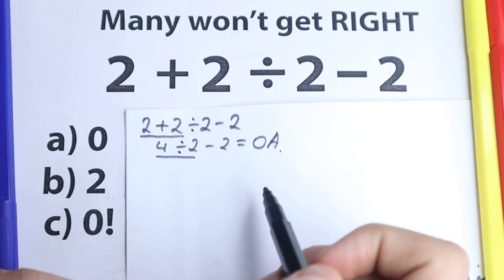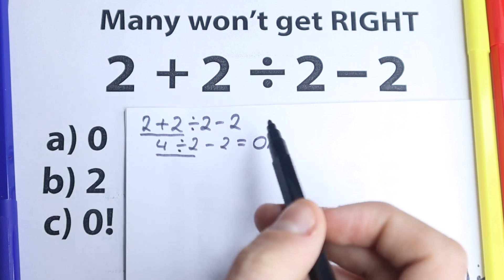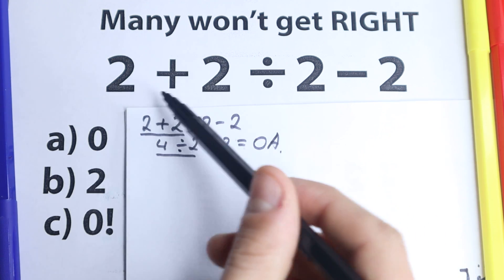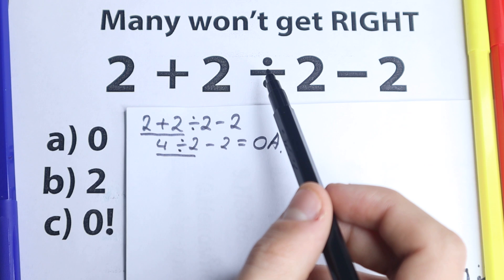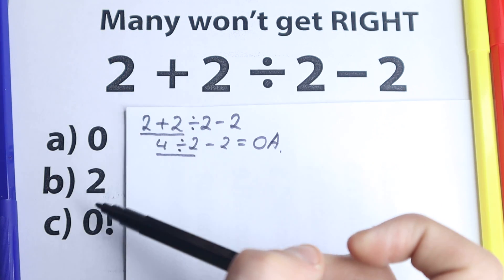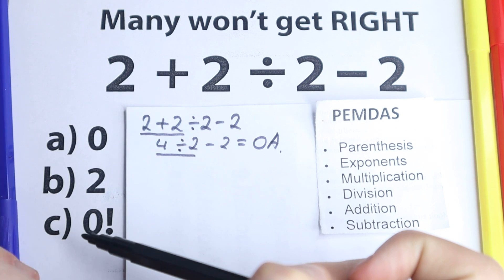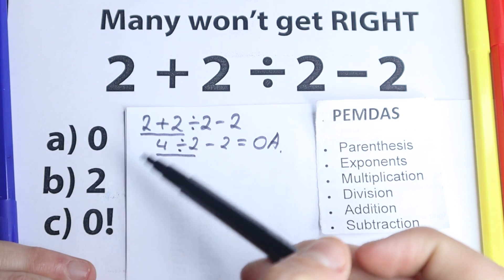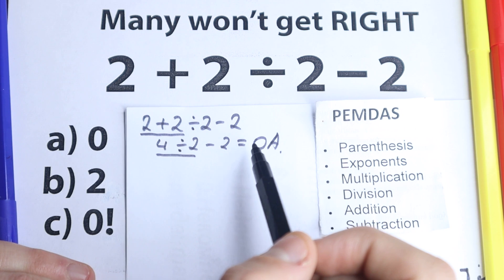But then I ask them, what about the order of operations? What about the correct order of operation? Because right here you solve it from left to right and you don't see that you have division, subtraction, and once more addition. So let's look at this PEMDAS order of operation and solve it according to PEMDAS.